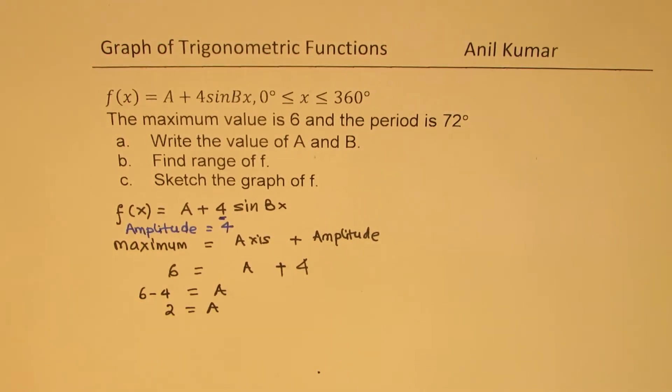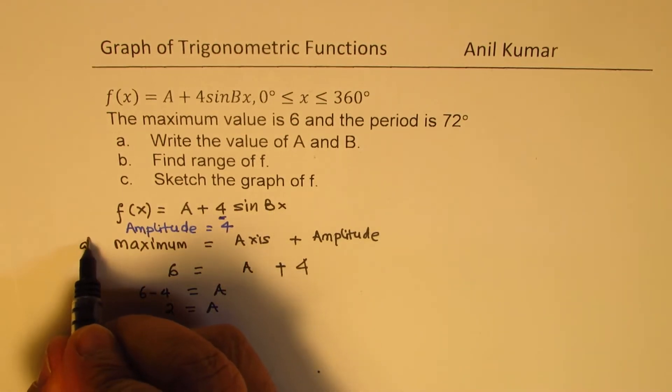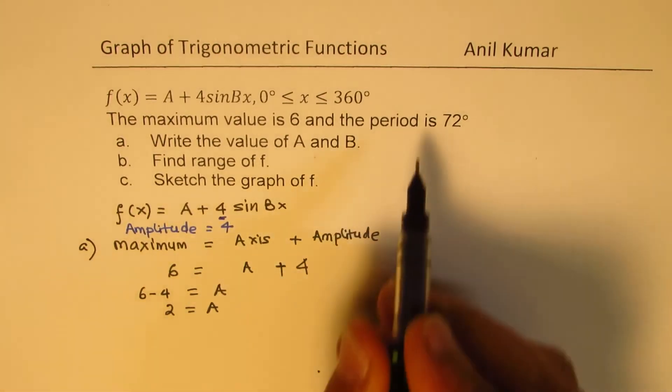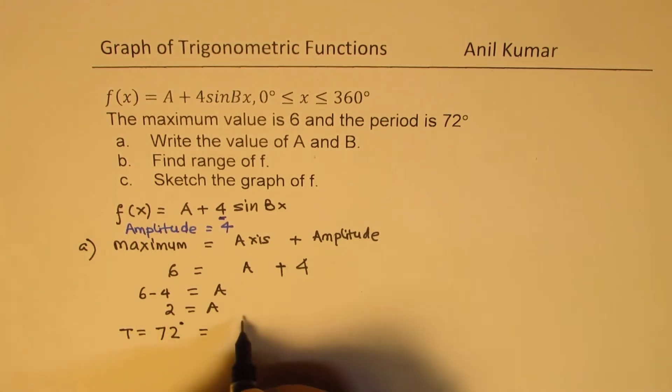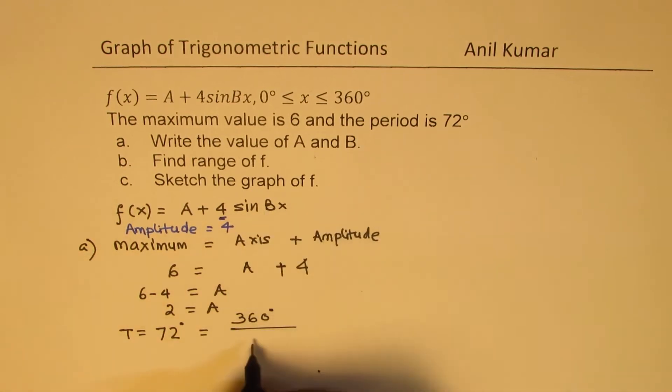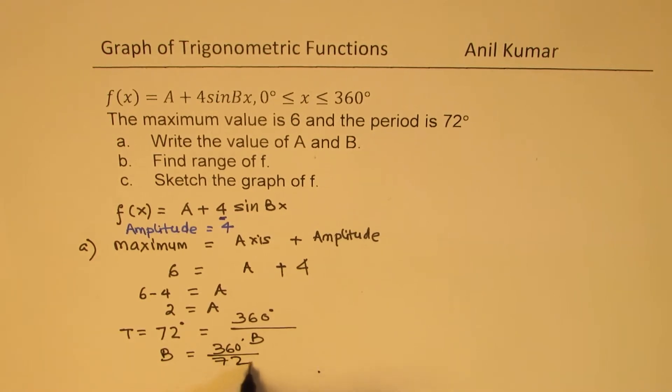Now, how do we find B? To find B, we know the time period is 72. So, time period is 72, and this time period is equal to, in degrees, 360 degrees divided by B. So, cross multiplication can help figure out what B is.